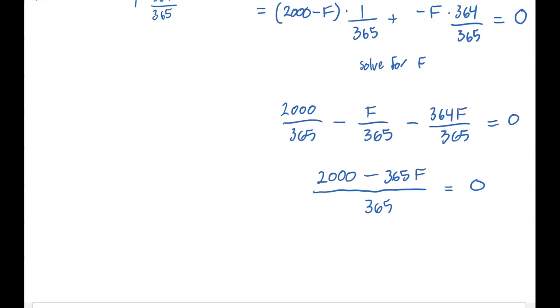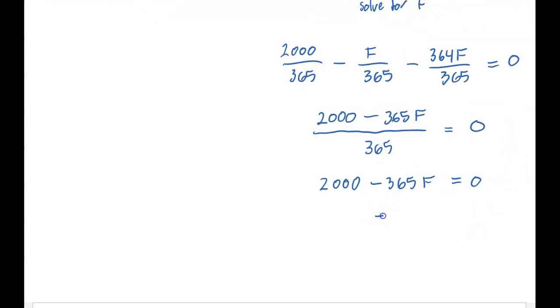I'm gonna multiply both sides by 365, and when I do that, the right-hand side is still gonna be zero. So then all I need to do is subtract 2000 from both sides like this. And then I'm gonna divide both sides by negative 365.